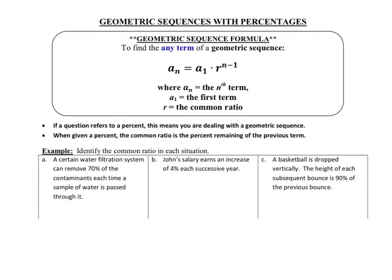Here's the big questions of the day: geometric sequences that deal with percentages. And these are where our word problems usually come in. To find any term of a geometric sequence, we use this formula where A sub n is the nth term, A sub 1 is the first, r is the ratio. Here's our couple big ideas. If a question refers to a percentage, this means we are dealing with a geometric sequence. Two, when given a percentage, the common ratio is the percentage remaining of the previous term. Slow down and get those typed written out carefully.